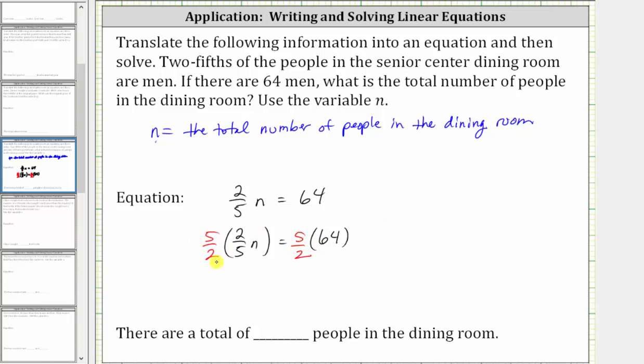On the left, we have five-halves times two-fifths, which is 10 tenths or one, and one times n is n. Or we can simplify out the common factors between the numerators and denominators before multiplying. Simplifying out the common factor of five, five divided by five simplifies to one in the numerator and denominator.